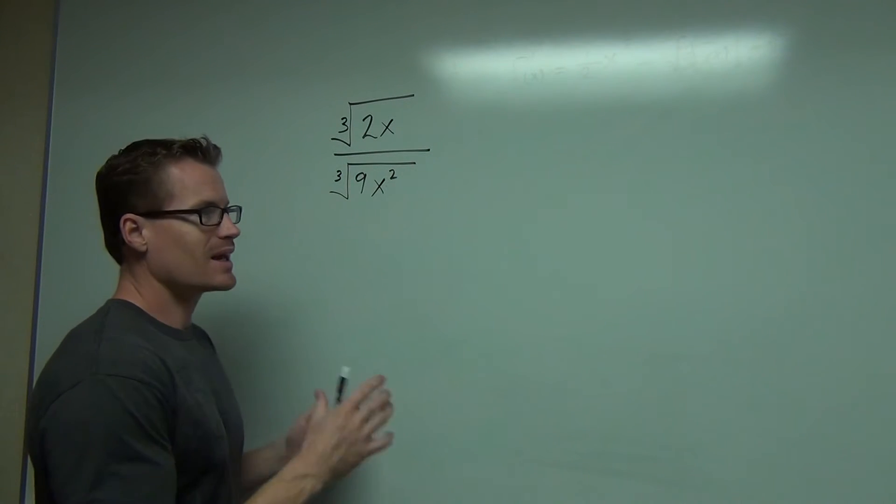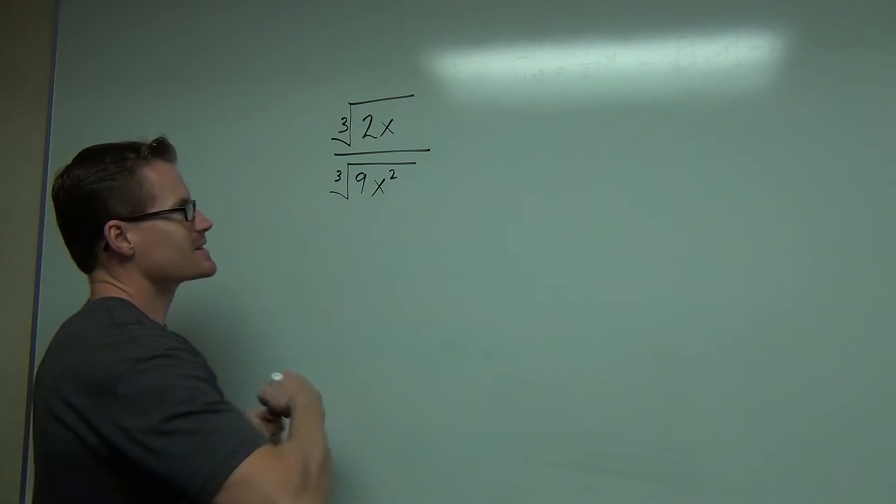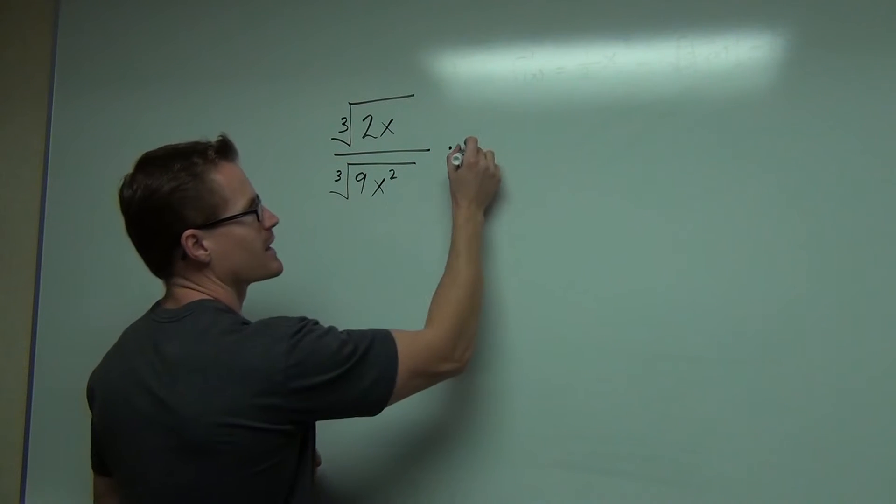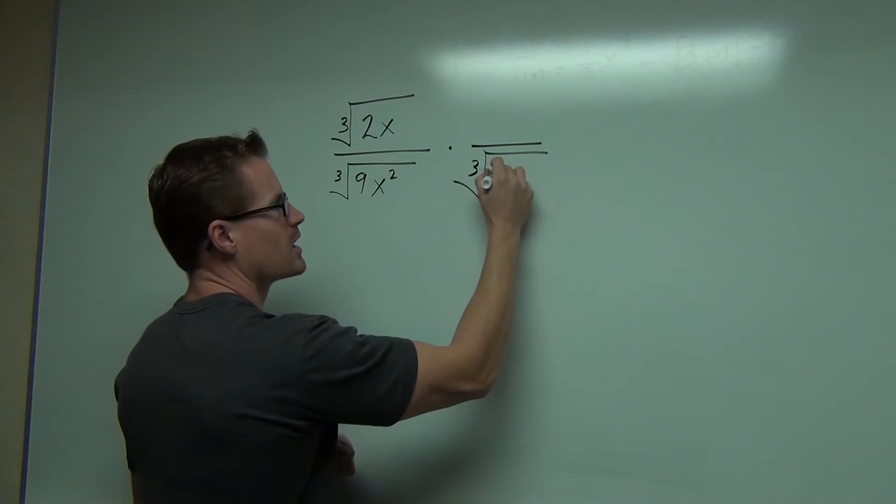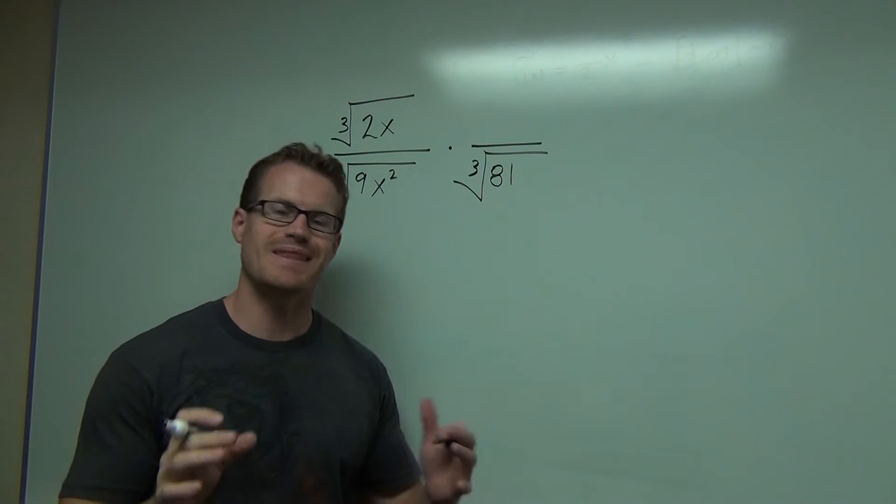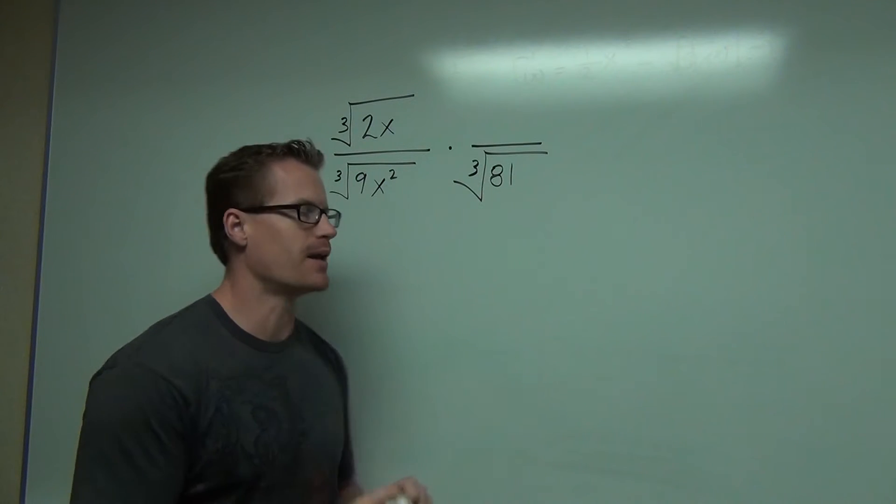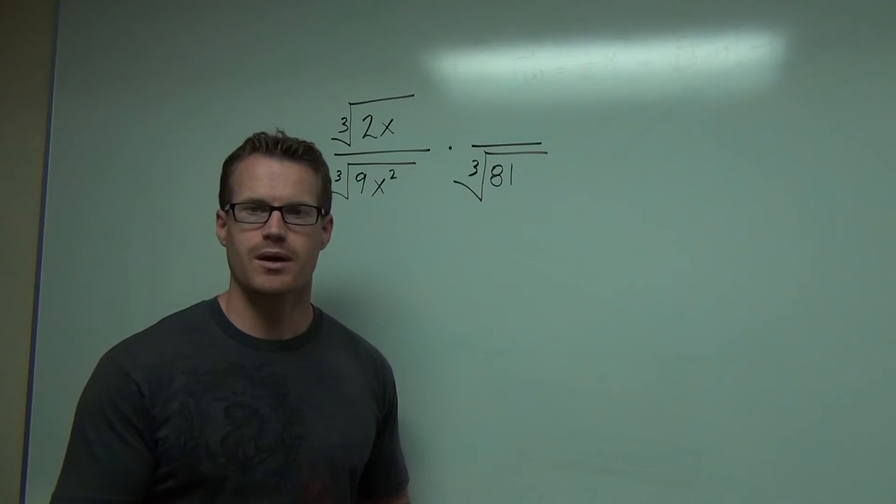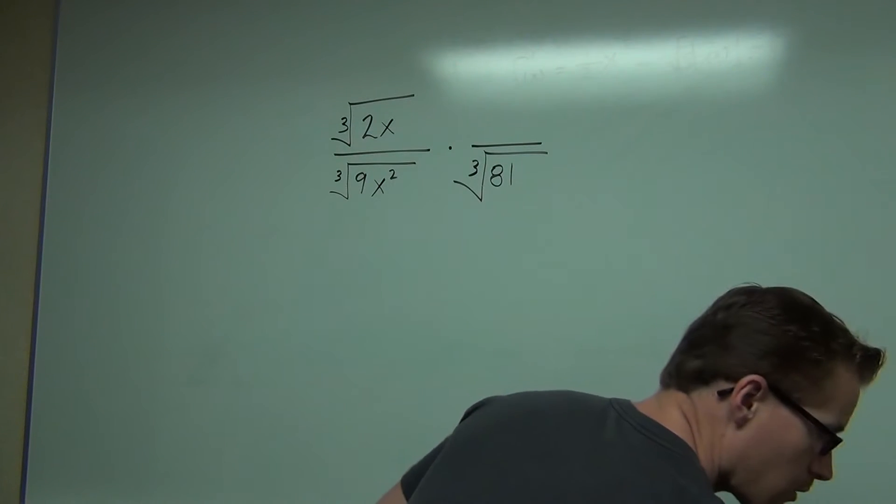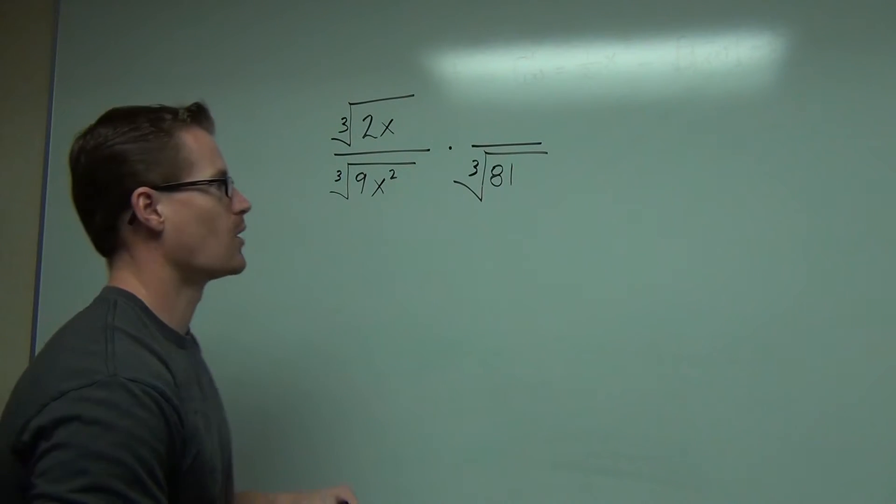So what I'd like you to do is instead of rationalizing the denominator by saying you need to make this a perfect cube, like multiply by 81 or something incredibly big—instead of that, think of this as something slightly different. Change that number into a power, or in other words, change it into a number to some power.